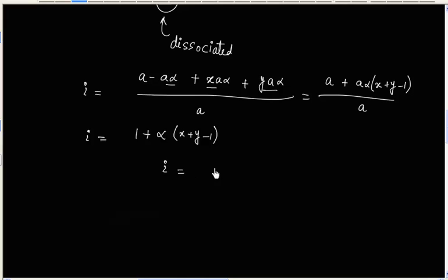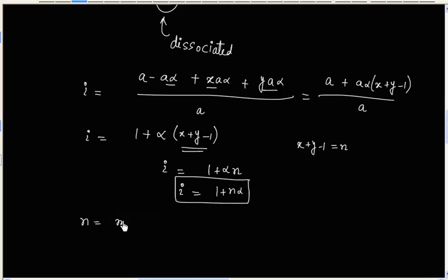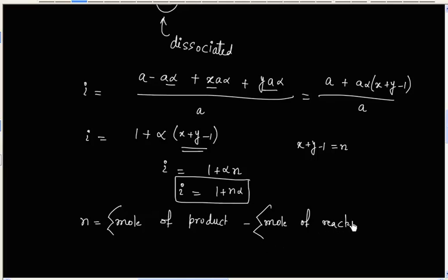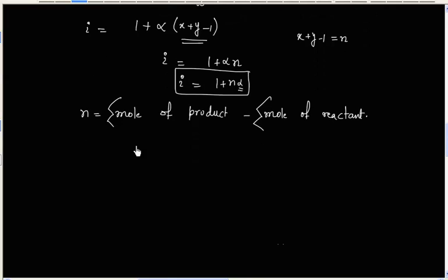We can also write this as i = 1 + Nα, where N = (moles of products) − (moles of reactant), that is the sum of moles of products minus the sum of moles of reactant. From this equation we can see that i is always greater than 1 for dissociation, because α is positive. So whenever we have dissociation, i > 1.